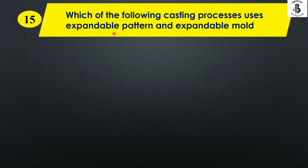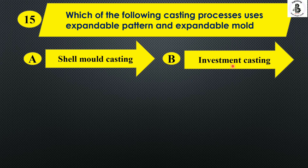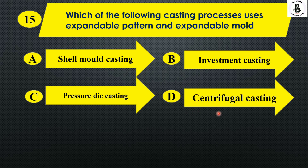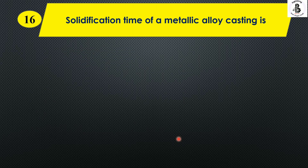Which casting process uses both an expandable pattern and an expandable mold? Option A shell mold casting, Option B investment casting, Option C pressure die casting, and Option D centrifugal casting. Investment casting uses both an expandable pattern and an expandable mold. The right answer is Option B.